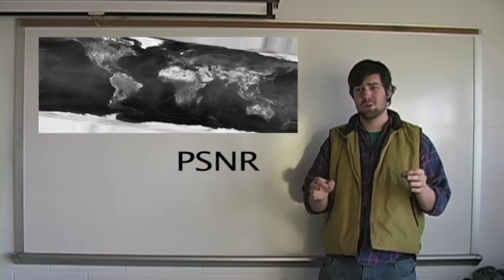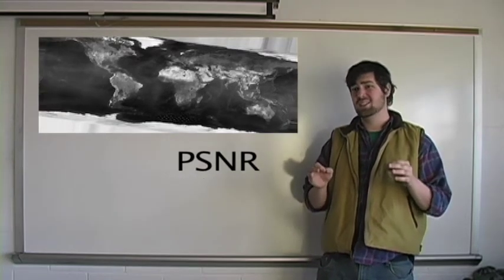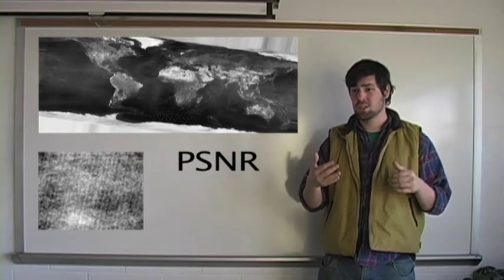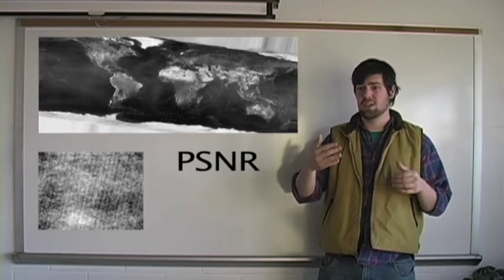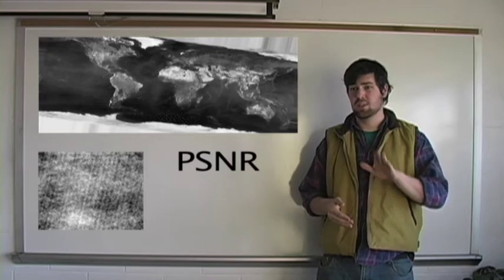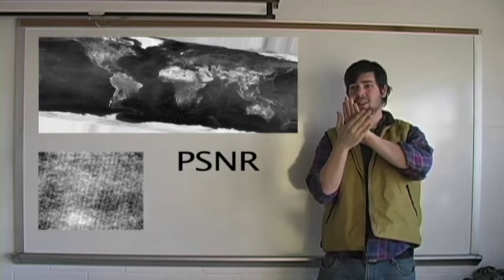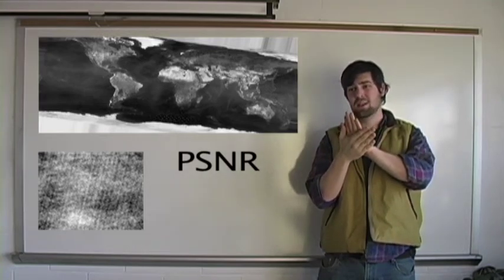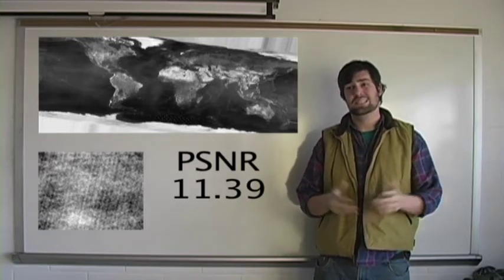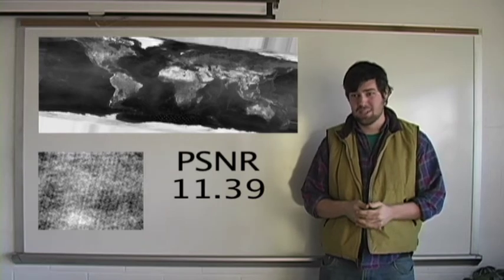Now if he decides he wants to rotate the image, we cannot extract the X as you see here. What's happening is when the image gets rotated, our watermarks also get rotated, and our algorithm is trying to extract them on a vertical and horizontal grid, so they don't line up and we don't extract it properly. We only get a PSNR of 11.39 in that case. We just gotta hope he doesn't rotate the image, I guess.